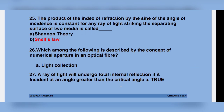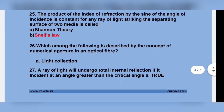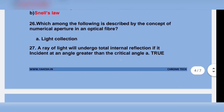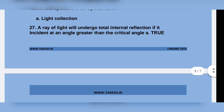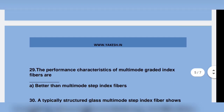Which among the following is described by the concept of numerical aperture in optical fiber? Light collection — the area of light which undergoes total internal reflection if it is incident at an angle greater than the critical angle. True.